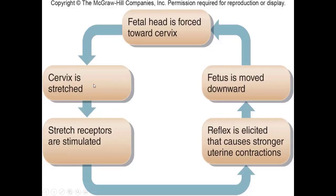These stronger uterine contractions cause the fetus to move further down toward the cervix, starting a cycle that continues for many hours until the baby is born. The cervix is stretched, stimulating stretch receptors, which causes the release of oxytocin, which causes even stronger uterine contractions, which moves the fetus further down the birth canal, stretching the cervix even more. This cycle continues hour after hour until the baby is born, at which point there is no longer a stimulus to stretch the cervix and no reason for the uterus to keep contracting.